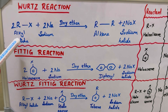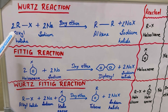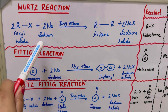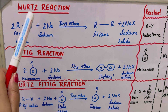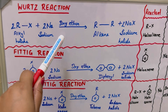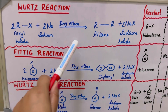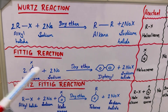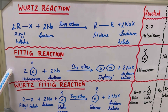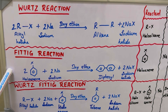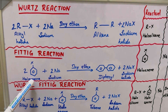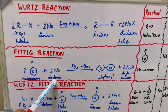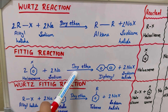In the Wurtz reaction, two molecules of alkyl halide and two molecules of sodium in presence of dry ether form alkane and sodium halide. In the Fittig reaction, two molecules of haloarene and two molecules of sodium in presence of dry ether form diphenyl and sodium halide.